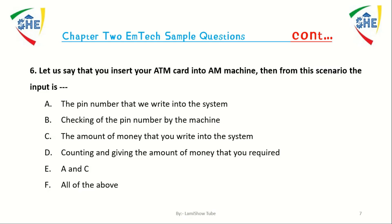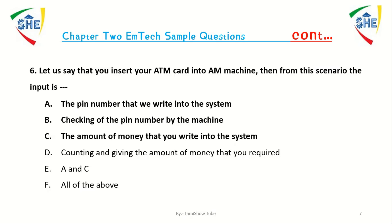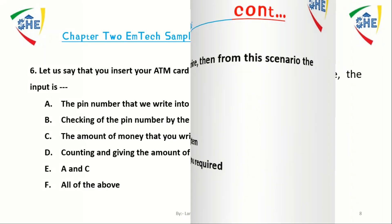Question number 6: Let us say that you insert your ATM card into a machine. From this scenario, the input is dash. A) The PIN number that you write into the system, B) Checking the PIN number by the machine, C) The amount of money you write into the system, D) Counting and giving the amount of money you required. Answer: E) A and C.